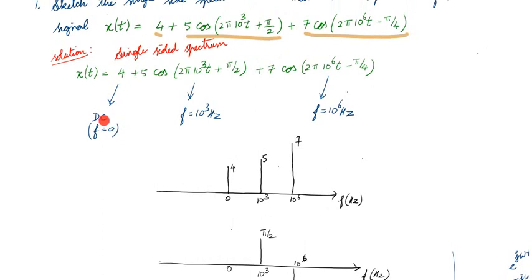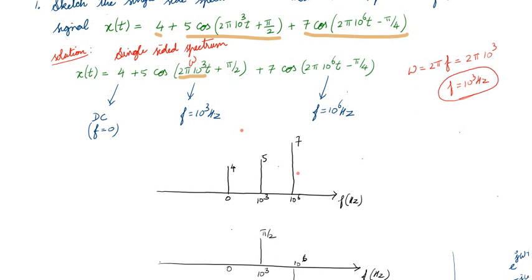So if you look at it, what is the frequency present? The value 4 doesn't have any frequency — it's a DC component, so the frequency is 0 Hz. Then if you look at the second term, 5·cos(2π·10³·t + π/2), this term is my ω, and since ω = 2πf, we get f = 10³ Hz. Similarly for the third term, f = 10⁶ Hz.